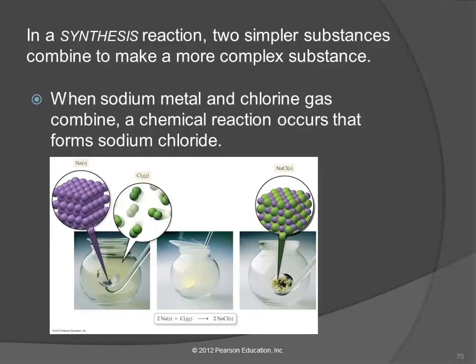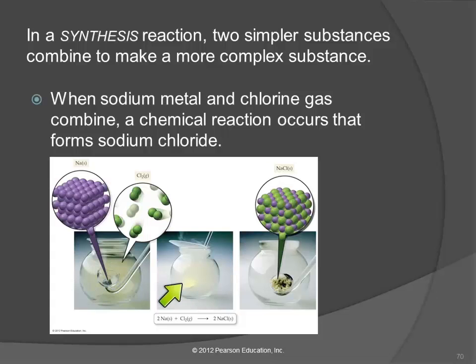In a synthesis reaction we've got two simpler substances combining — I prefer to call it a combination reaction. In this example we've got sodium metal and chlorine gas, and they're going to combine fairly violently and form sodium chloride. We started with two different substances and we end up with only one substance — it's a combination or synthesis reaction.